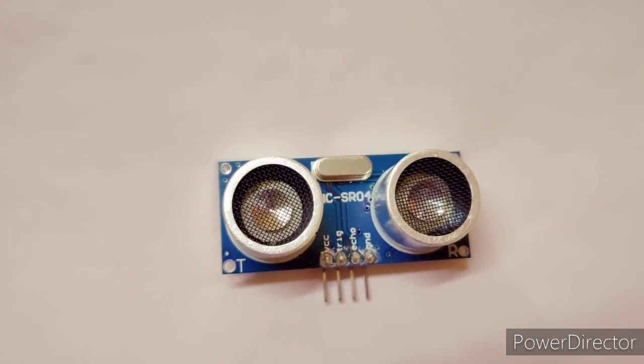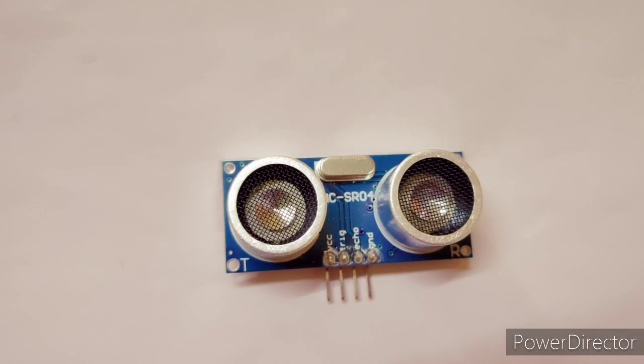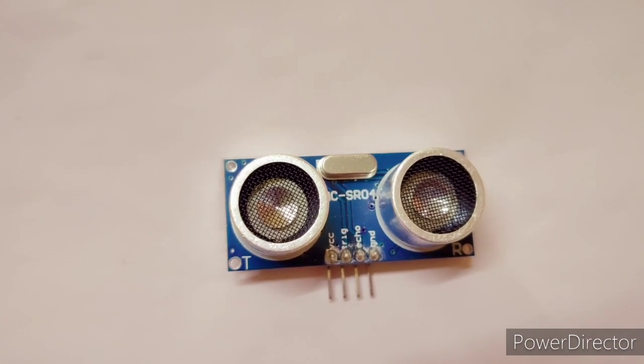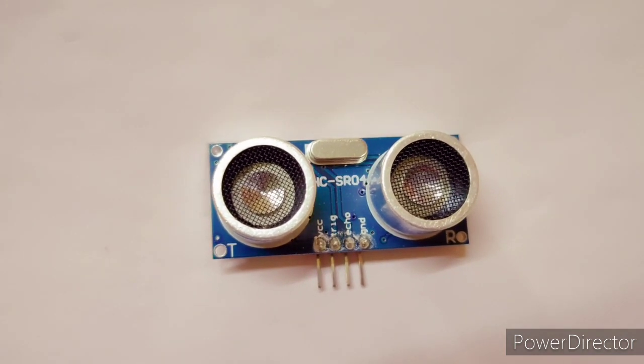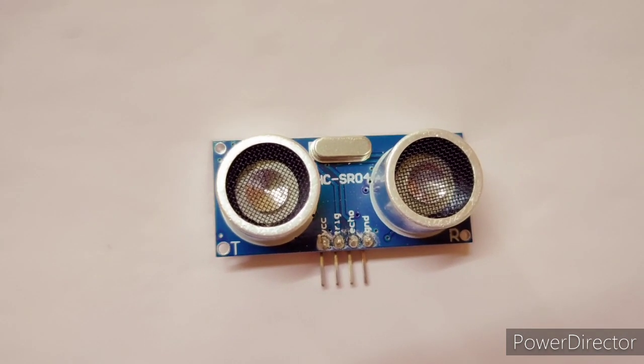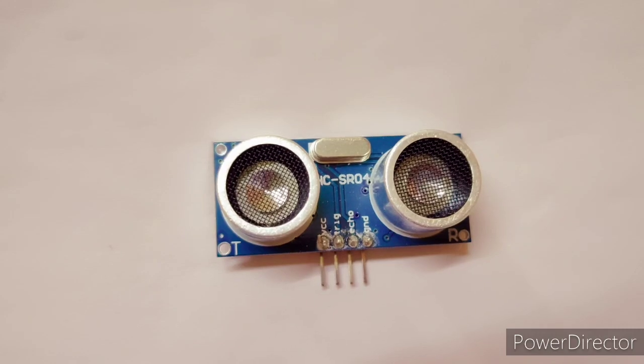Ultrasonic sensors are those sensors which use ultrasonic waves to detect objects or to measure the distance between itself and the object. So what are ultrasonic waves? Ultrasonic waves are those waves whose frequencies are beyond the normal hearing limit, more than 20 kilohertz.